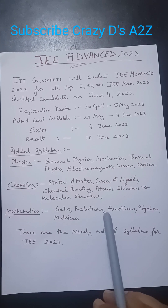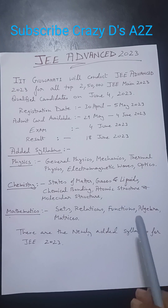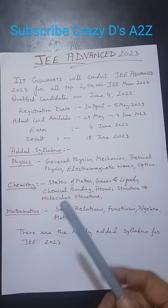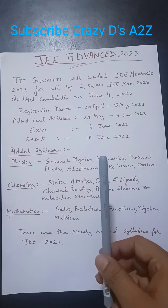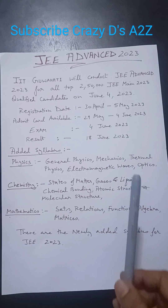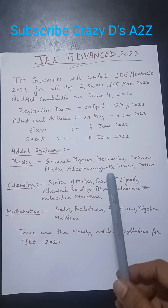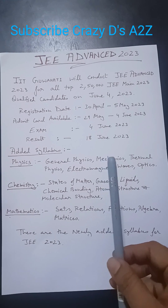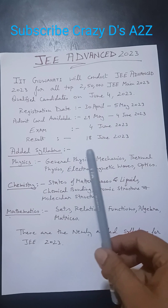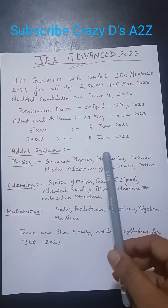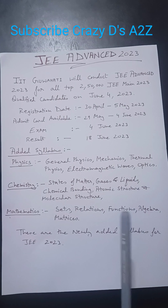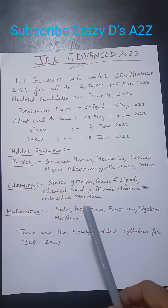There are nearly 2.5 lakh students who are going to appear for this JEE Advanced examination. The registration date is 30th April till 5th May 2023, and the admit card will be available from 29th May to 4th June 2023. The examination date is 4th June and the result will be declared on 18th June 2023.